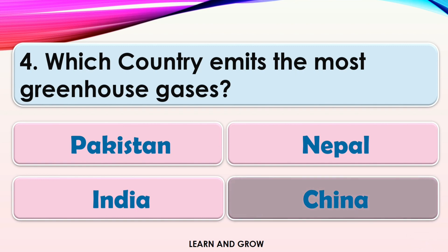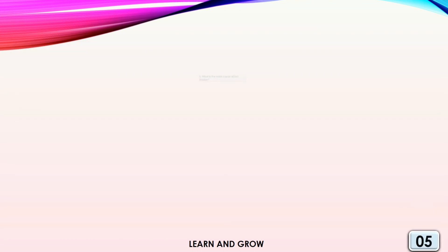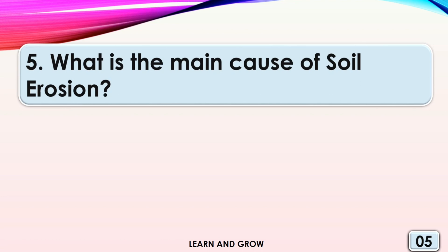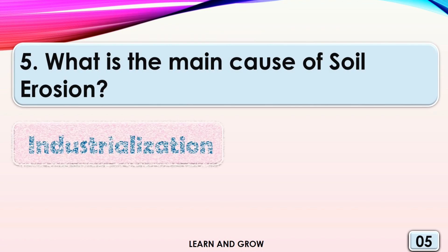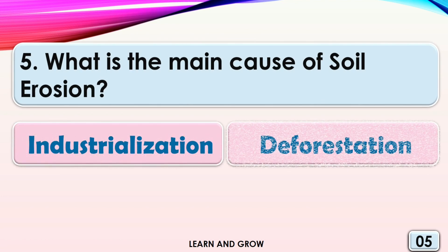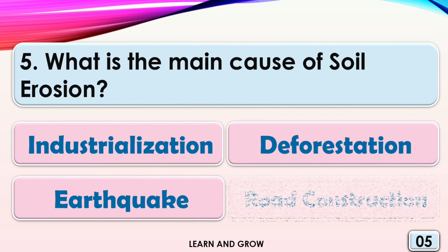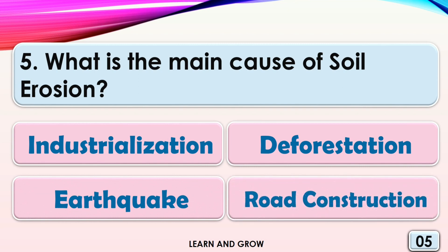The answer is China. What is the main cause of soil erosion? Options are: A, Industrialization; B, Deforestation; C, Earthquake; or D, Road Construction.